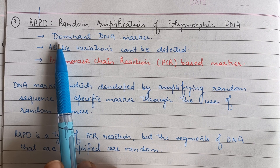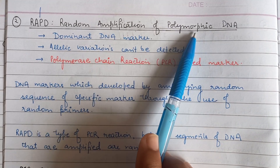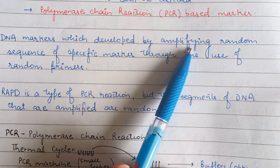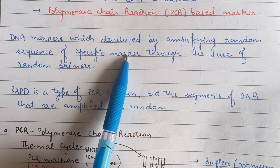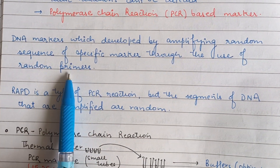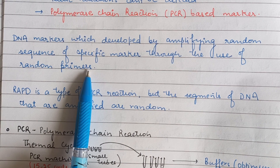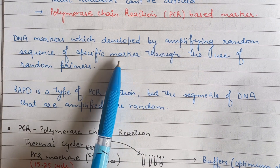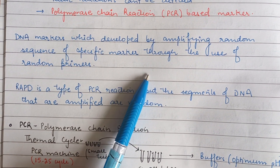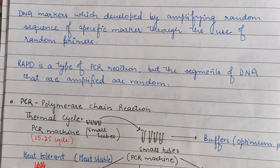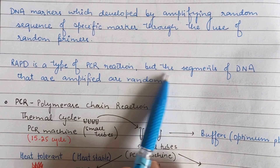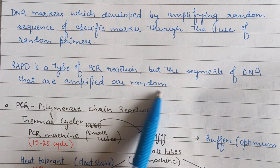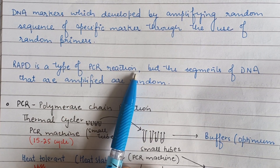In RAPD, we randomly amplify a polymorphic DNA. The DNA markers are developed by amplifying random sequences of specific markers through the use of random primers in the PCR. Through these primers and choosing a random sequence of a specific marker, we multiply them and then through electrophoresis we detect different bands. It's a type of PCR reaction but the segments of DNA that are amplified are random.